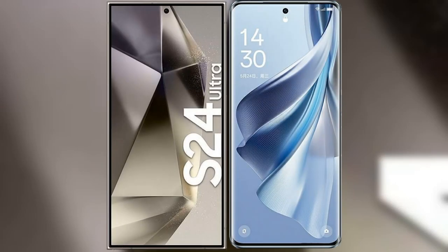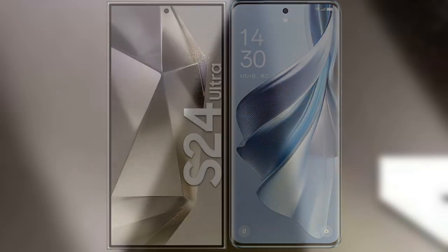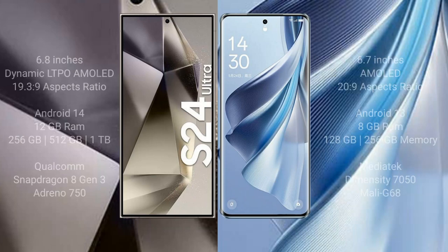I will compare the new Samsung Galaxy S24 Ultra with Oppo Reno 10. Samsung Galaxy S24 Ultra comes with a 6.8-inch Dynamic LTPO AMOLED display with an aspect ratio of 19.3:9. Oppo Reno 10 comes with a 6.7-inch AMOLED display and aspect ratio of 20:9.